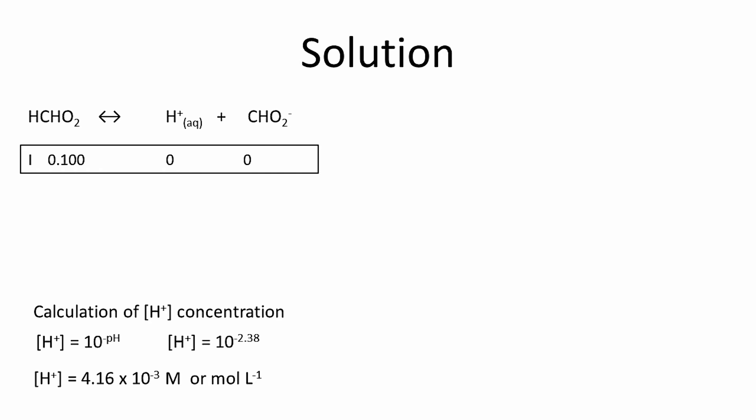Initially we assume there is no hydrogen ion concentration or formate ion concentration. With time the acid dissociates and produces hydrogen ions and formate ions. The change in concentration increases the concentration of hydrogen ions, which we calculated using the pH: 4.16 × 10⁻³. So we write the change in concentration using that number.